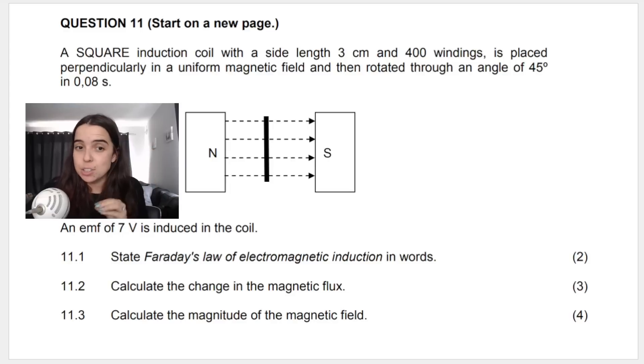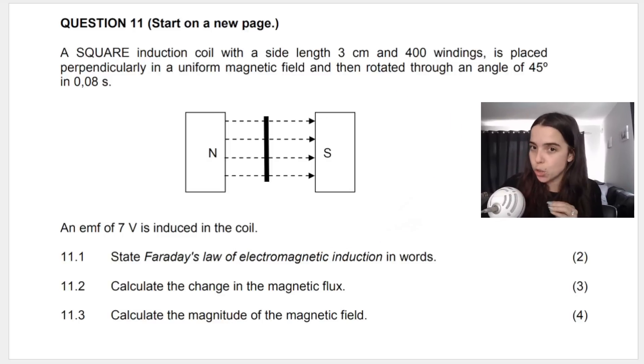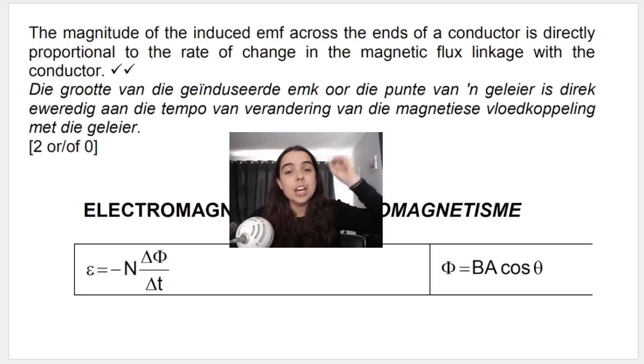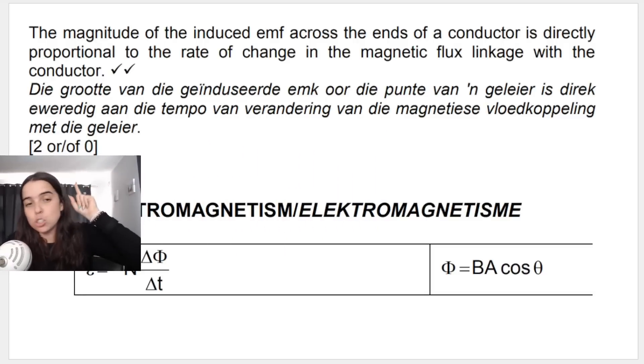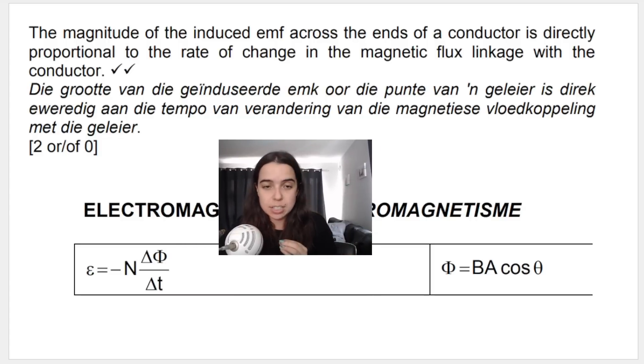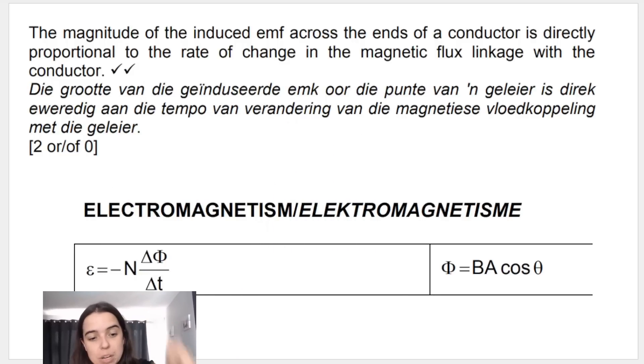They want us to state Faraday's law of electromagnetic induction in words. Not a formula, I want the definition. You need to know the definition word for word. The memo says it's two or zero, which means if you don't get the definition correct, you're going to get zero. So the magnitude of the induced EMF across the ends of the conductor is directly proportional to the rate of change in the magnetic flux linkage with the conductor. That definition actually links to this formula over here.